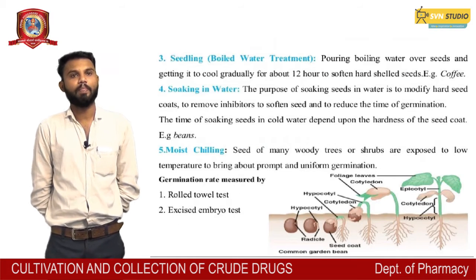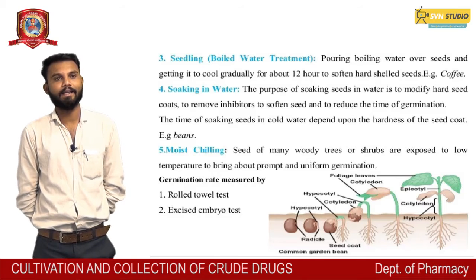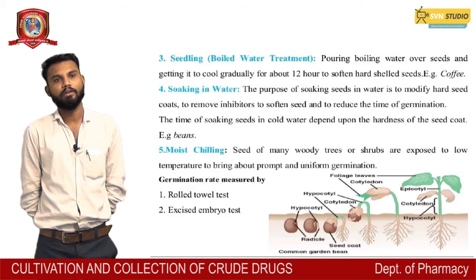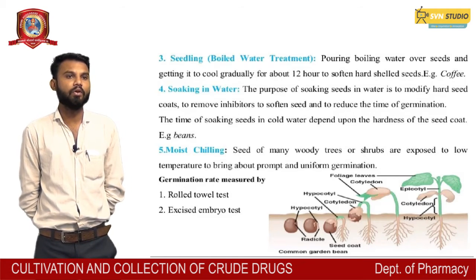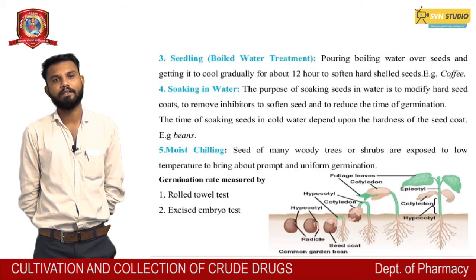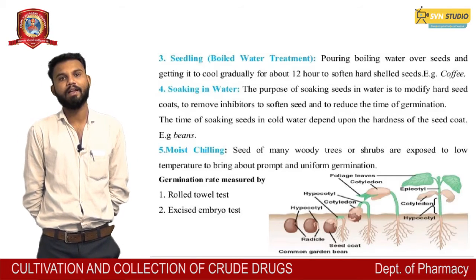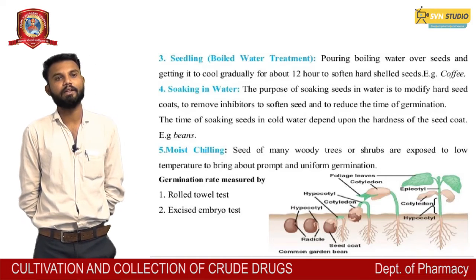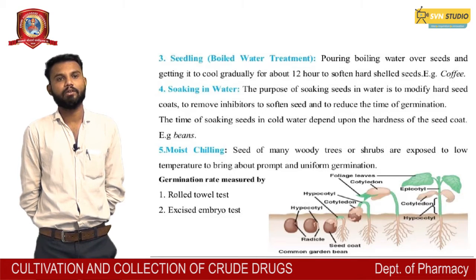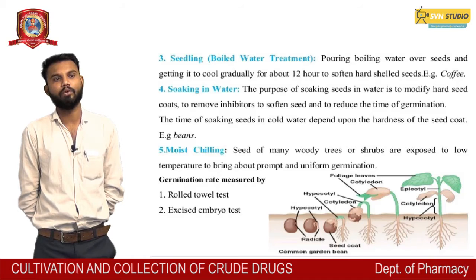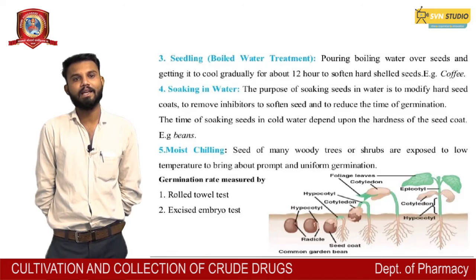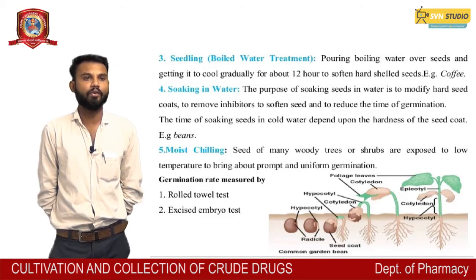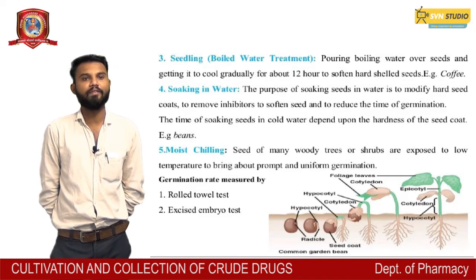Pouring boiling water over seeds and allowing to cool gradually for about 12 hours softens the hard seed coat. Soaking in water: the purpose of soaking seeds is to modify the hard seed coat, to remove inhibitors, to soften the seed, and to reduce the time of germination. The time of soaking in cold water depends upon the hardness of the seed coat. Moist chilling: seeds of many woody trees and shrubs are exposed to low temperature to bring about and promote uniform germination.